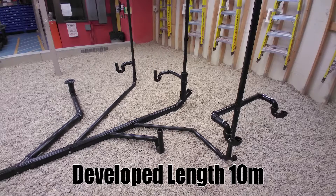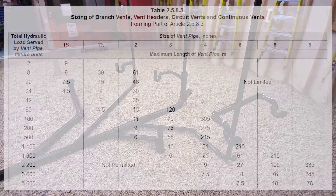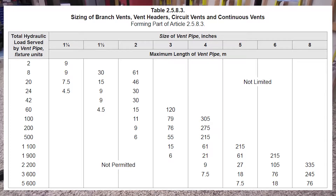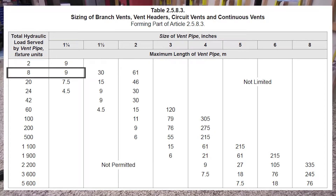My developed length will be 10 meters, going from the top of the wet vent until it meets a stack vent. Referencing table 2583, I come down to eight fixture units and move across to the right. One and a quarter inch pipe is only good to nine meters of developed length, so I move one column to the right to one and a half inch continuous vent, which is good to 30 meters. That will be the size of my continuous vent.